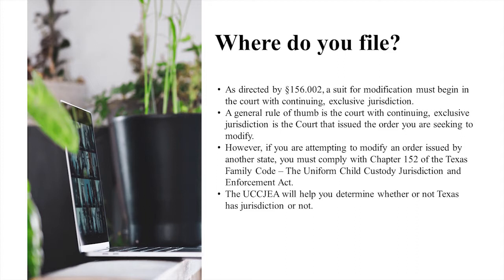For instance, if you have a couple who are from Oklahoma and they move to Houston — or one of them moves to Houston and another moves to Arkansas — if neither one of the parents are living in the court of continuing jurisdiction, which would be in Oklahoma, and the child has moved with one parent into Texas, then Texas can assume jurisdiction. But there is a domestication requirement, and that is a more detailed presentation.